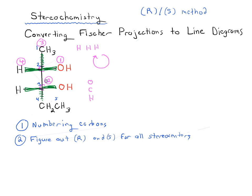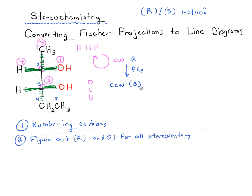Going from priority 1 to 2 to 3 traces out a clockwise direction. Normally clockwise means R, but that assumes the number 4 ranked group is in the back. Since hydrogen is actually pointing out to the front, we flip the designation — so carbon 2 is actually S as drawn.